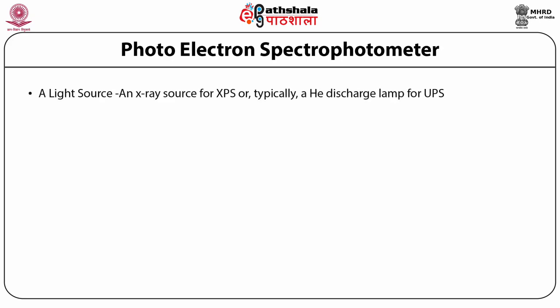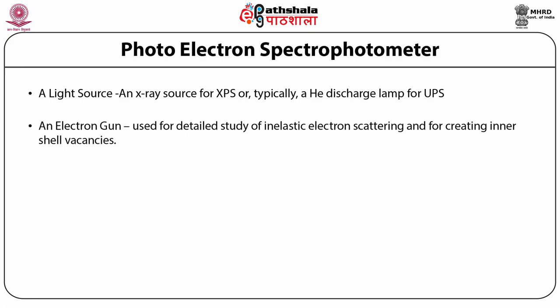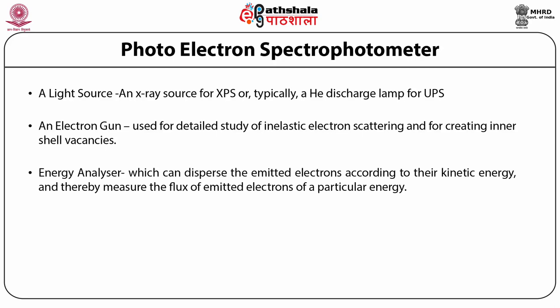For the light source, in XPS it is an X-ray source and for UPS it is a helium discharge lamp. An electron gun is used for detailed study of inelastic electron scattering and for creating inner shell vacancies. The energy analyzer disperses the emitted electrons according to their kinetic energy and thereby measures the flux of emitted electrons of a particular energy. A high vacuum environment is used to enable the emitted photoelectrons to be analyzed without interference from gas phase collisions.